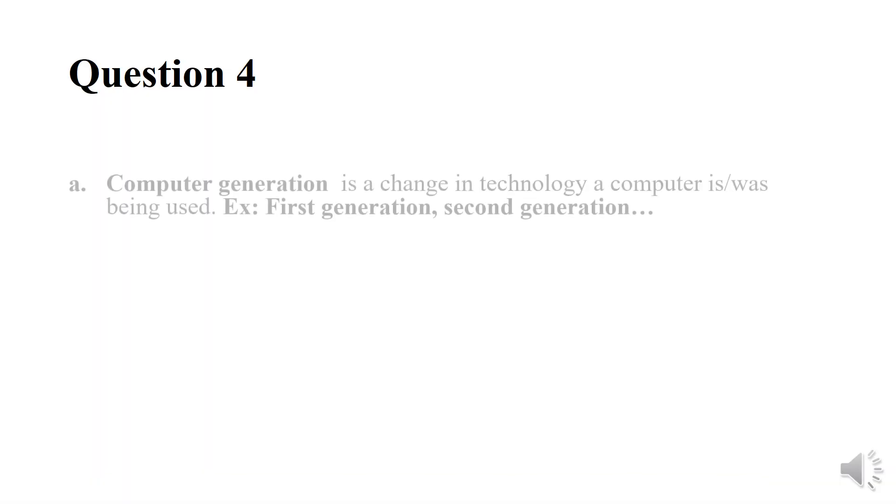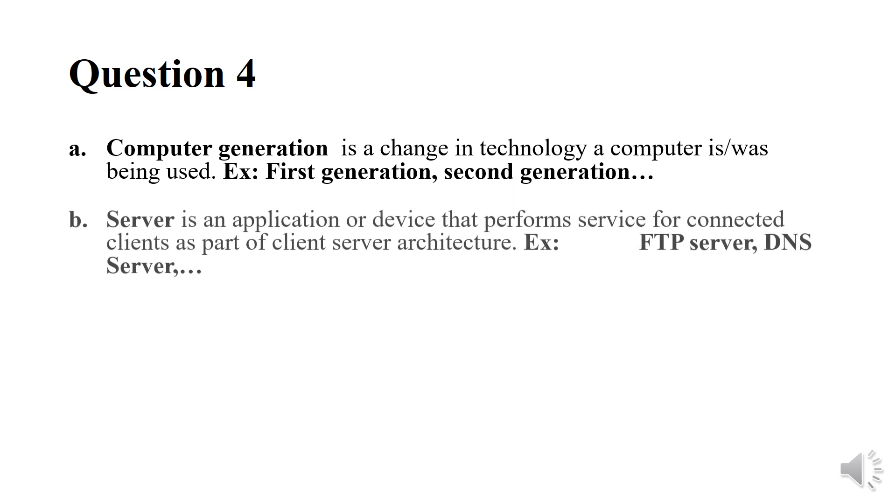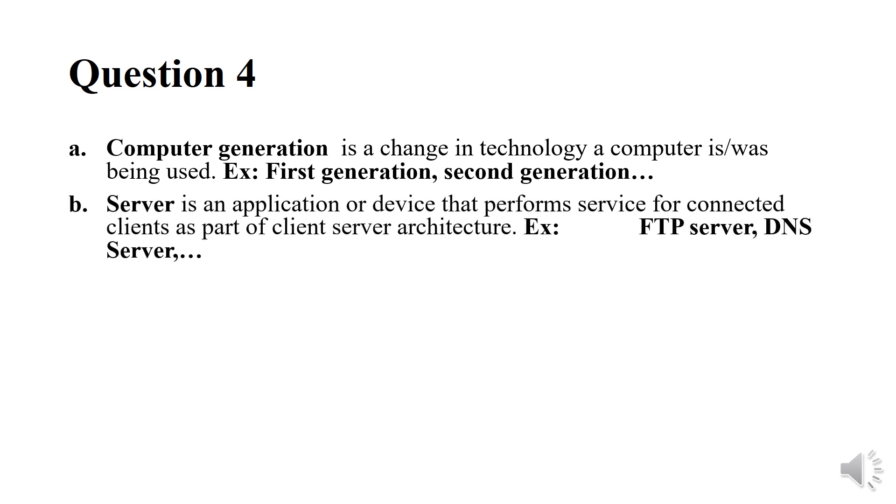Question number four. A. A computer generation is a change in technology a computer was being used. Example: first generation of computers, second generation of computers, and so on. B. Server is an application or a device that performs a service from connected clients as a part of client server architecture. Example: file transfer protocol server, domain name system server. C. Artificial intelligence is capability of a computer to mimic human behavior.